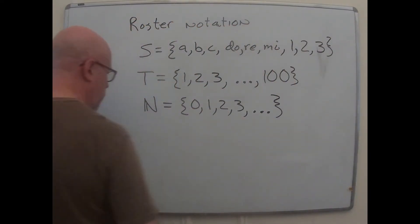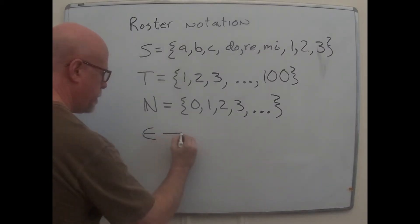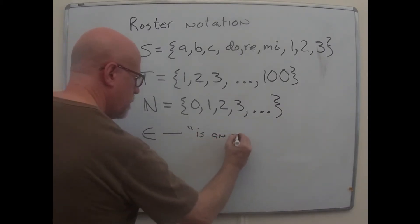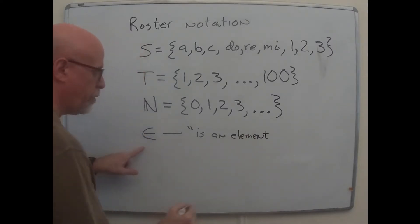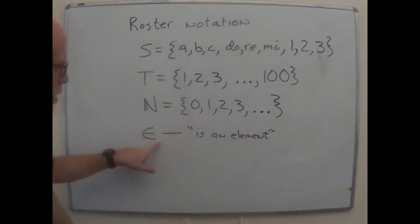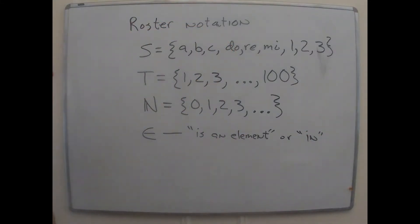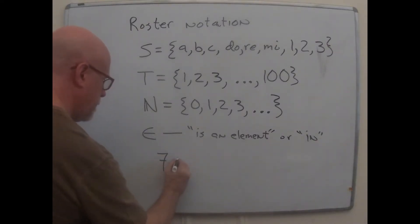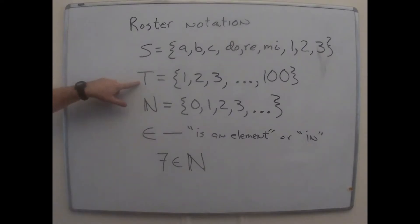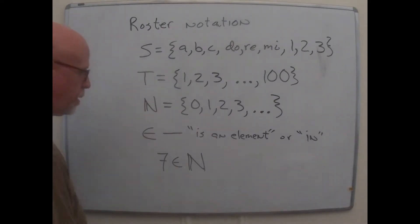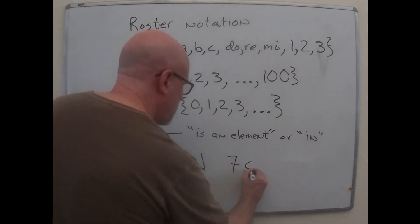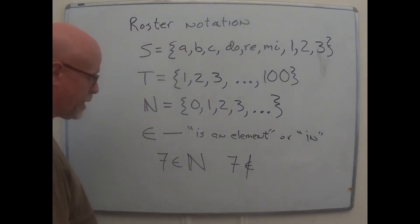There is a funny symbol you want to watch out for. It looks like the letter E. And it stands for, is an element of. You see why it's nice to have a single symbol for sort of a longish phrase. You can also just, okay, so there's a short way to say it in words too. You can say in. So, for instance, I could write seven is an element of the natural numbers that I just wrote down.